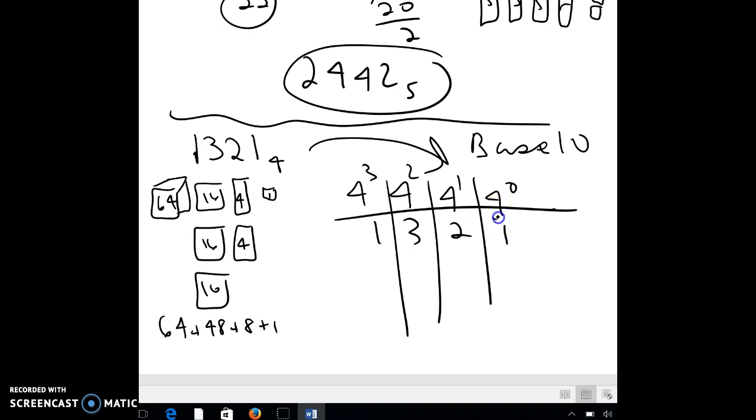So I have one of these, and again, remember, anything to the zero power is worth 1, so that's 1. I have 2 of that place, and that place is worth 4, so I have 2 of those, which is 8. And I have 3 of my 16s, which is 48. And I have 1 of my 4 cubed, which is 64.